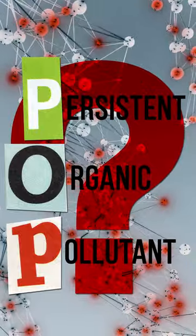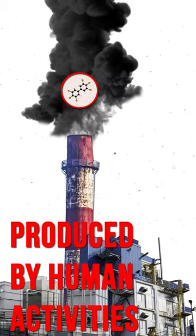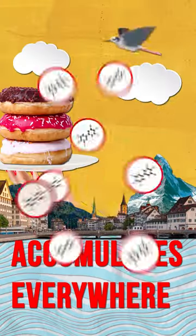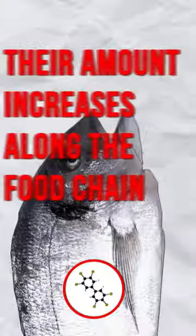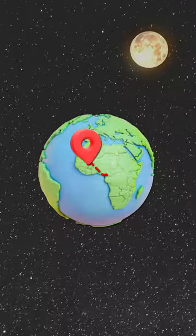I've got one minute to tell you what a POP is. A chemical compound produced by human activities which resists biological degradation, which accumulates everywhere. Their amount increases along the food chain and, as they are super resilient, they are transported over long distances.